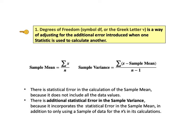We don't need to make this adjustment for the sample mean, but we do need to do it for the sample variance. We divide by n minus 1 instead of n.